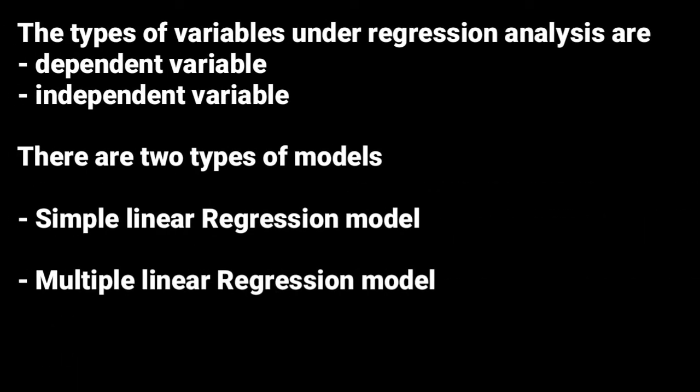And the types of variables under regression analysis, we have the dependent variable and then the independent variable. The dependent variable is that variable that is dependent on the independent variable. It is influenced by the independent variable. And the independent variable is that variable that is not influenced or affected by the dependent variable.